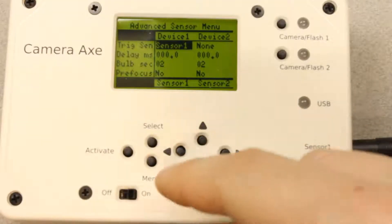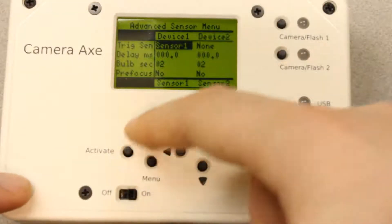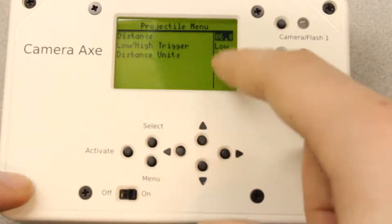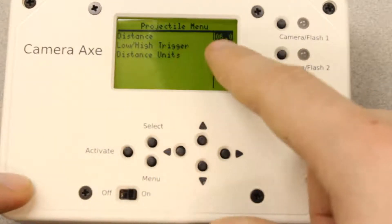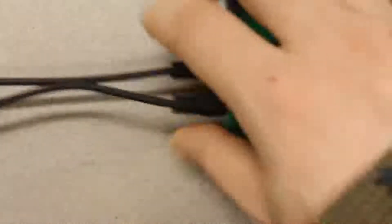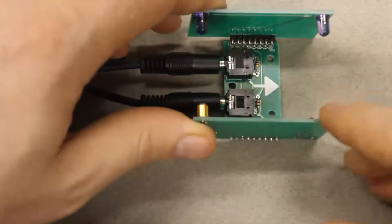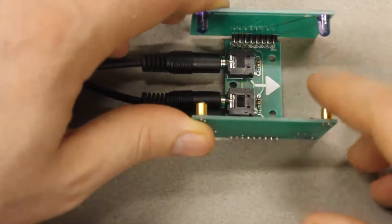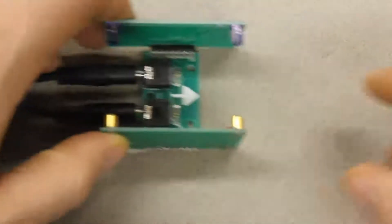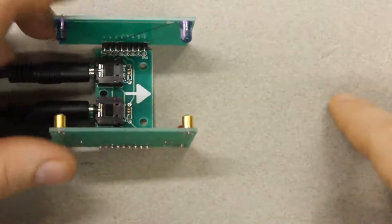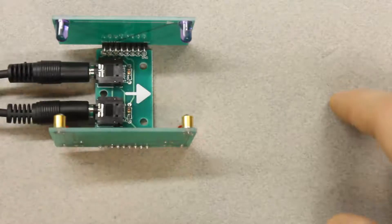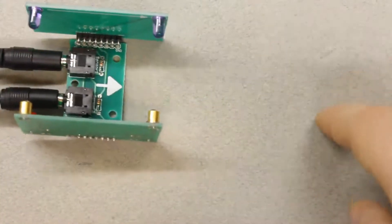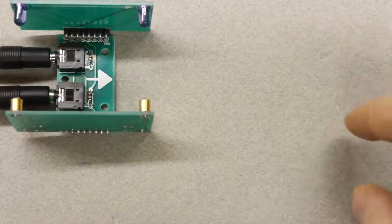Now the software for the projectile sensor works exactly the same, nothing has changed here. So the distance is the distance from this sensor pair to where you actually want the projectile to be when the photo is taken. So if you put in six inches, that would mean six inches from here to where the projectile is when the photo would be taken.